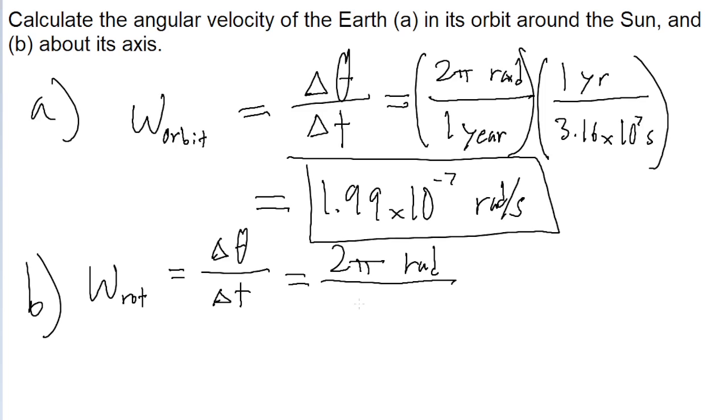And this is divided by a time interval now of one day, since it takes one day for the Earth to rotate about its axis. Once again, we're going to need to do unit conversion on the time. One day is equal to 86,400 seconds. That's something you can calculate pretty easily or just look up.